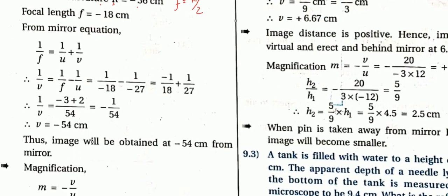Now using the mirror formula: 1/f = 1/u + 1/v, so 1/v = 1/f minus 1/u. Substituting f = minus 18 and u = minus 27: minus minus gives plus. Taking LCM of 54, we get minus 3 plus 2 divided by 54, which gives minus 1/54. Therefore v equals minus 54 cm.